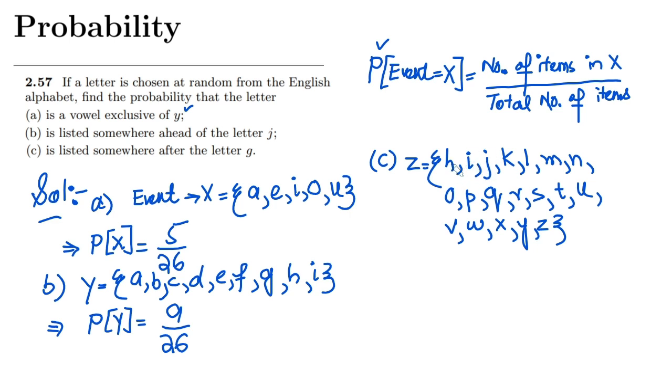Now let me count them: 1, 2, 3, 4, 5, 6, 7, 8, 9, 10, 11, 12, 13, 14, 15, 16, 17, 18, 19. So there are 19 items in this set.